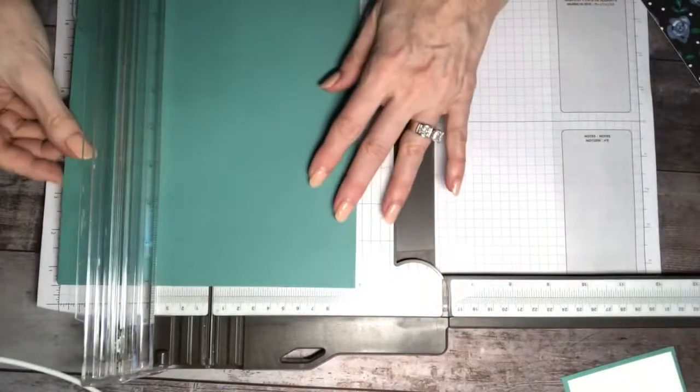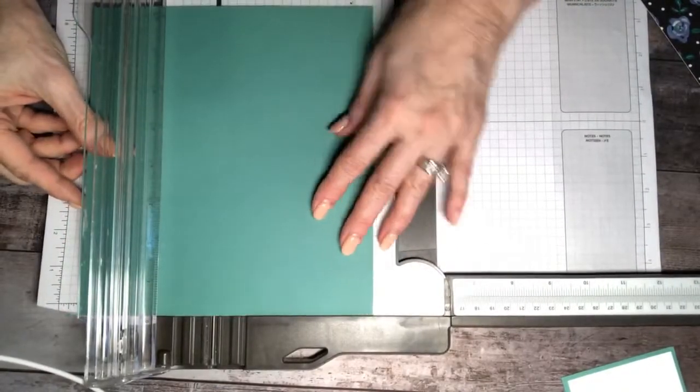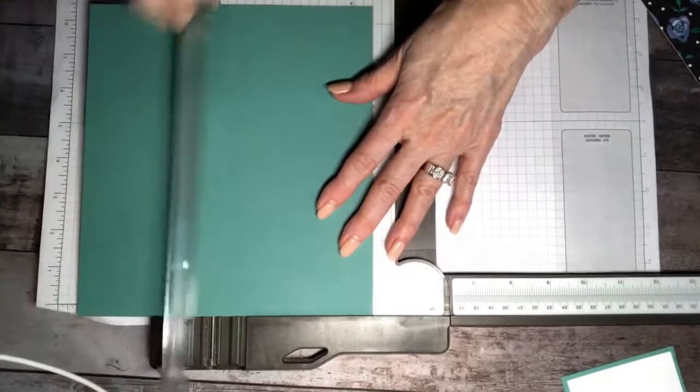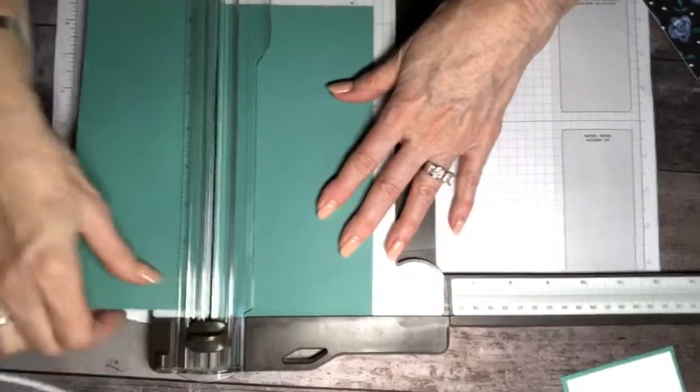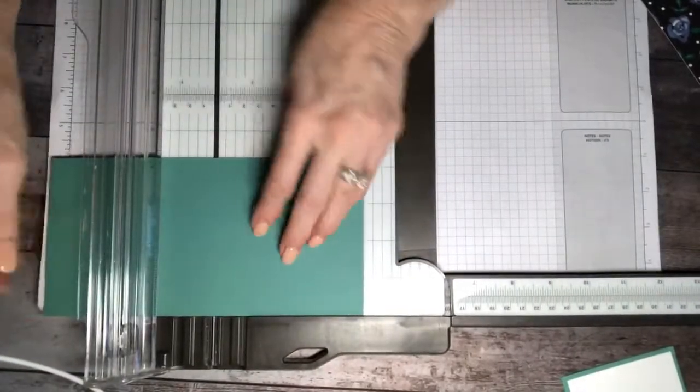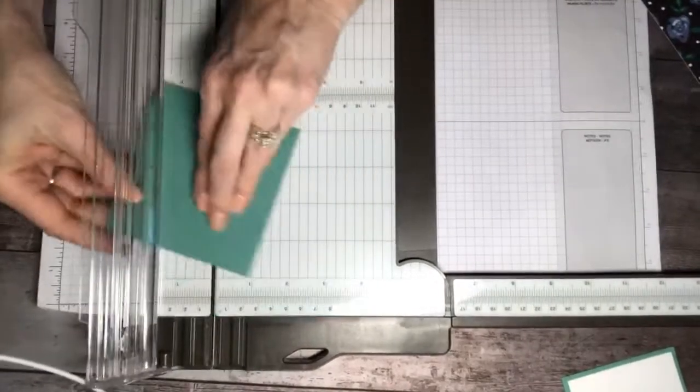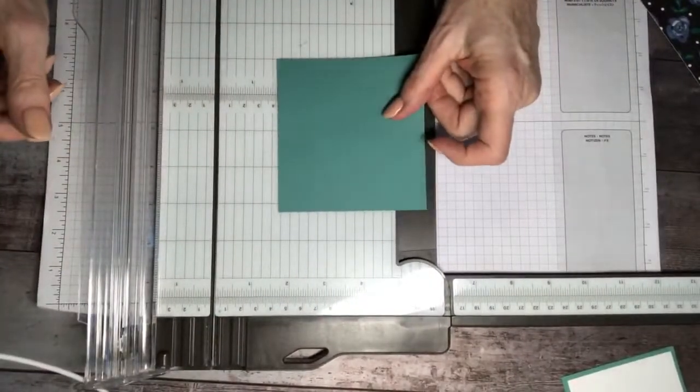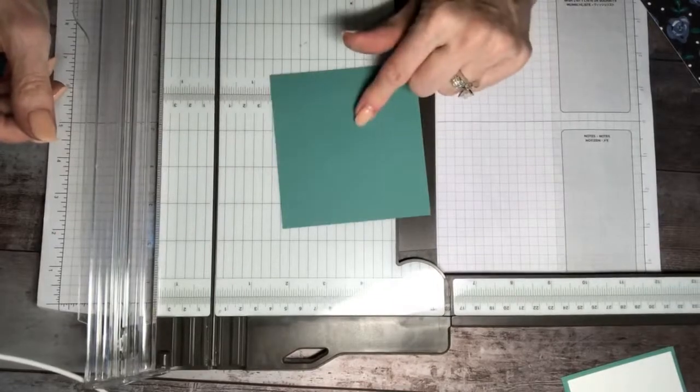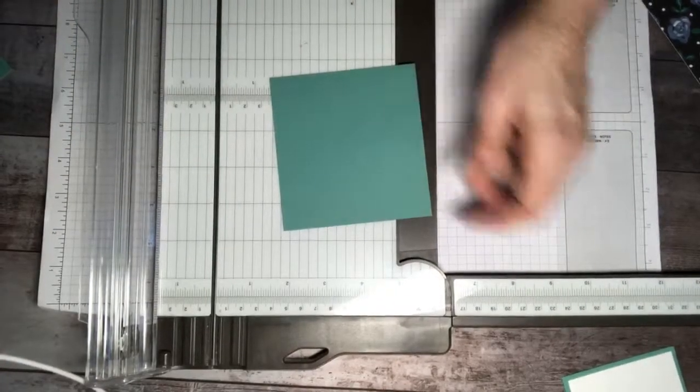But we have one more layer. So step three, we're going to cut the jade color again. That's too short, okay. We're going to cut the jade color again at four and one quarter, and then again at four.